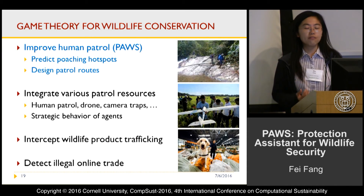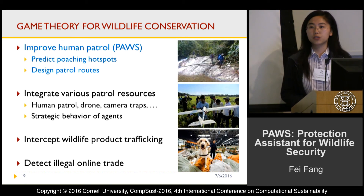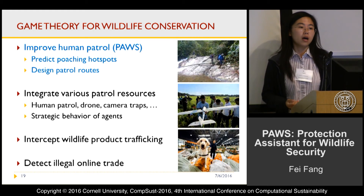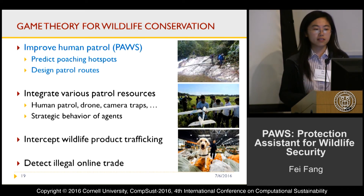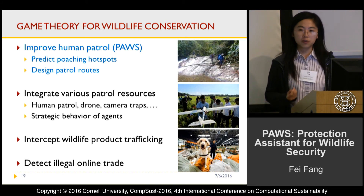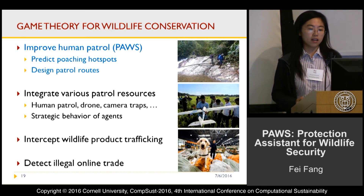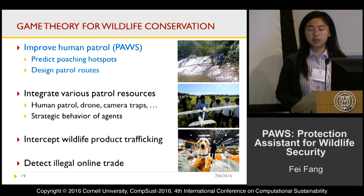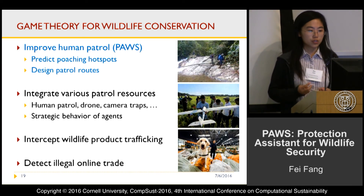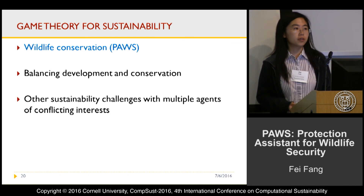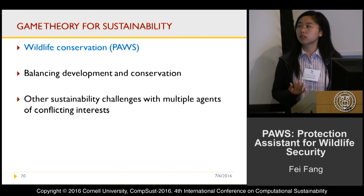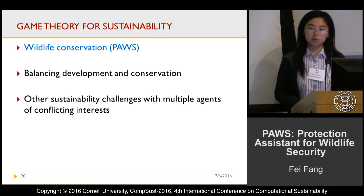PAWS solves one facet of the wildlife conservation problem, but game theory has the potential to address other facets too. For example, game theory can integrate various patrol resources such as human patrols, drones, and camera traps, and consider strategic behaviors like bribing patrollers or destroying equipment. Game theory can also be integrated with machine learning to intercept wildlife product trafficking and detect illegal online trading. Going beyond wildlife conservation, game theory has potential to address other sustainability challenges, such as balancing economic development with environmental conservation, and other multi-agent problems with conflicting interests.